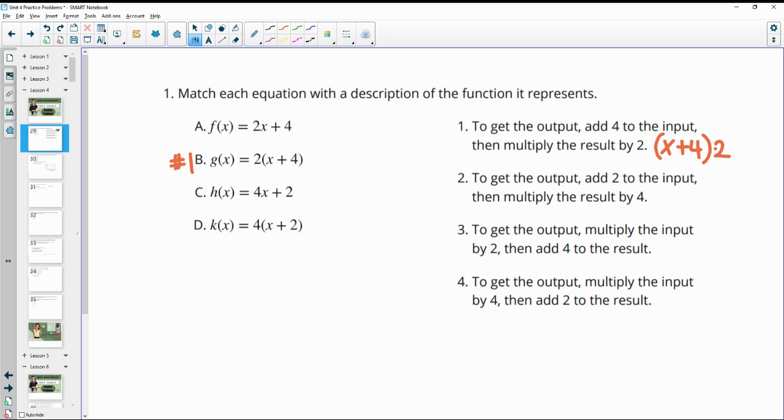Number two, to get the output, add 2 to the input. So we're going to take the input plus 2 and then multiply the result. So multiply this whole thing times 4. So again, we'll look for parentheses x plus 2 and then multiplying by 4. That's letter D.